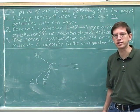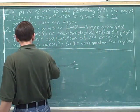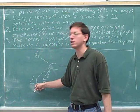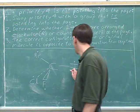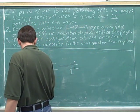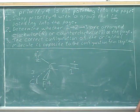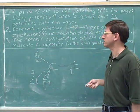Determine the configuration around this stereocenter. This is supposed to be a Cl for chlorine. Using the periodic table, you can see that iodine has the highest atomic number, then bromine, then chlorine, and fluorine gets the lowest priority. Where is the number four priority? The number four priority is on the wedge, so it is not pointing into the page. So we need this three-step method.